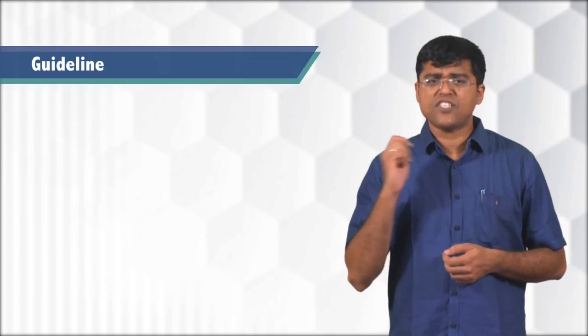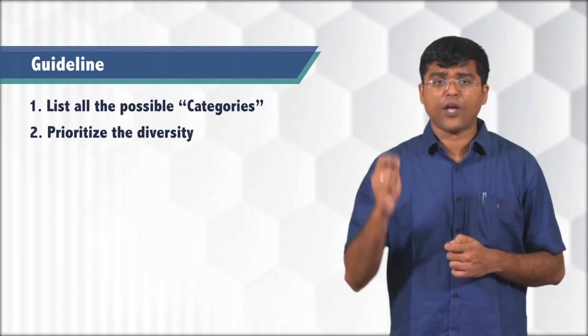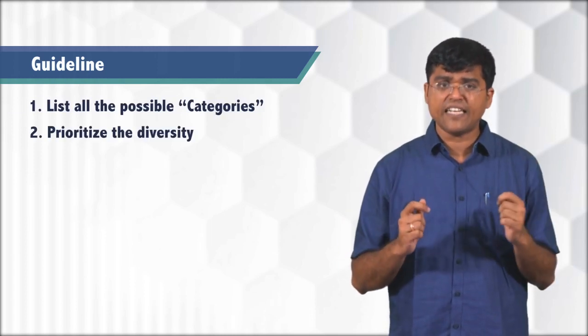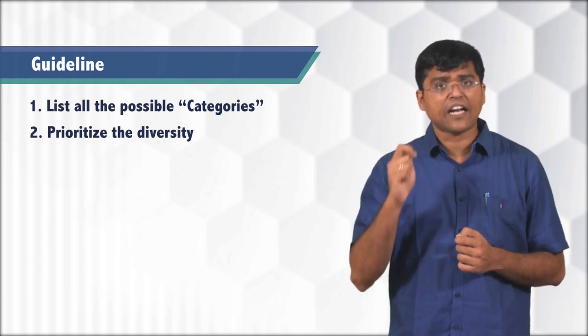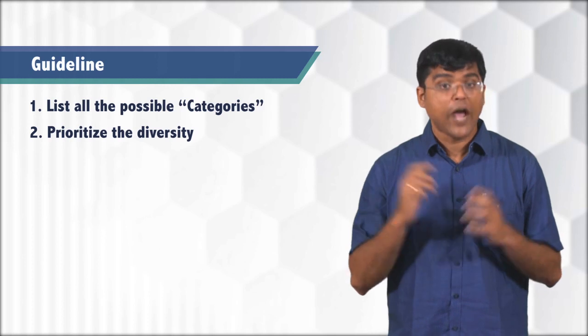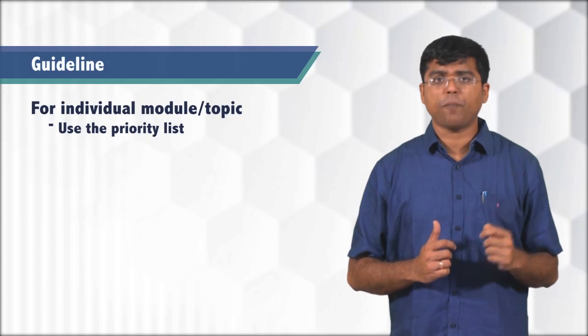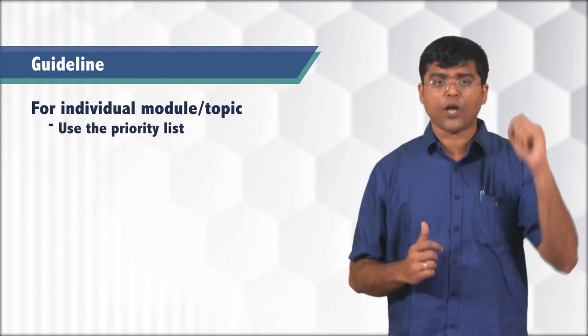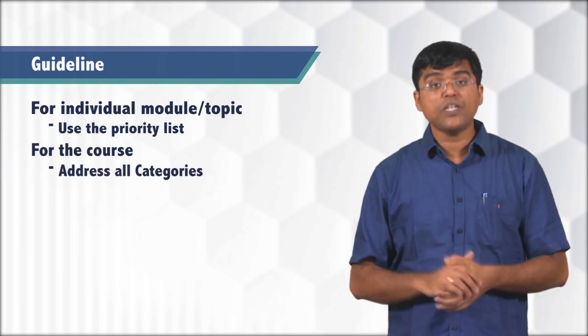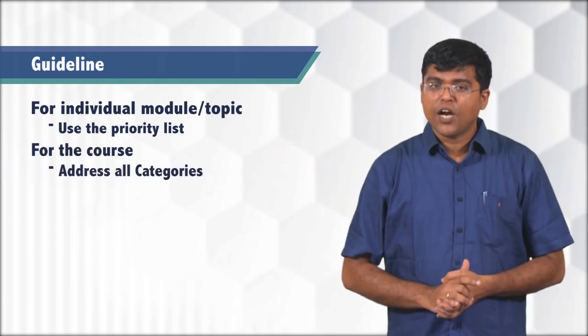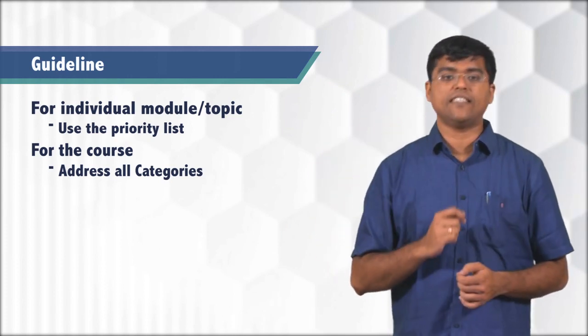Now as an instructor, what you should be doing is you should rank or prioritize these diversity categories by answering the question, who are your main target audience to help you in scoping. When it comes to an individual topic, you should use this priority to perform the scoping exercise, but when it comes to the entire course, try to address most of the diversity categories that you have already listed.